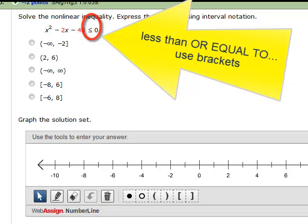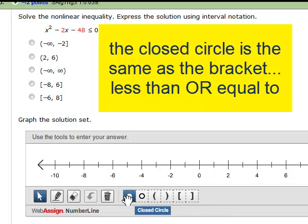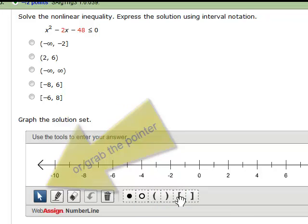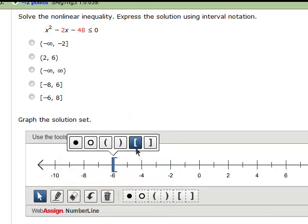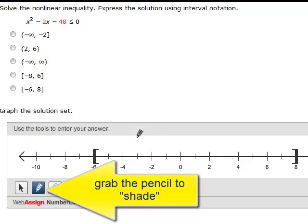So I'm going to use a bracket, or some people could use a closed circle. So I will grab the left bracket, get here at negative 6. I have to tell them again to use a left bracket. I'm going to go up to 8. I want the right bracket. And then I'm going to grab my pencil and shade in the middle.